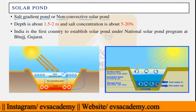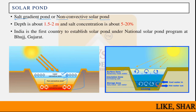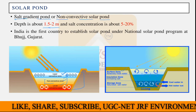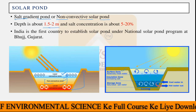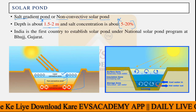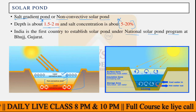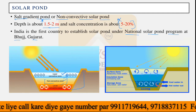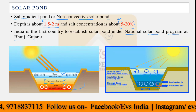Questions typically asked about the solar pond are theoretical. For example, what is the depth of the solar pond? The depth is generally 1.5 to 2 meters. The salt concentration ranges from 5% to 20% across different layers. India is the first country to establish a solar pond under the National Solar Pond Program at Bhoj, Gujarat. A YouTube video of this solar pond is available, which I suggest you watch — it provides practical knowledge about the solar pond.